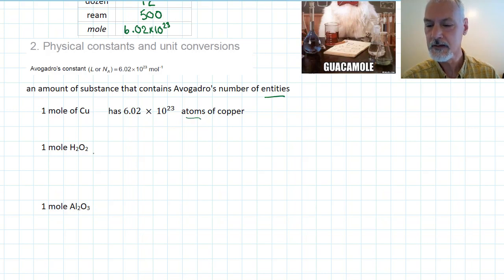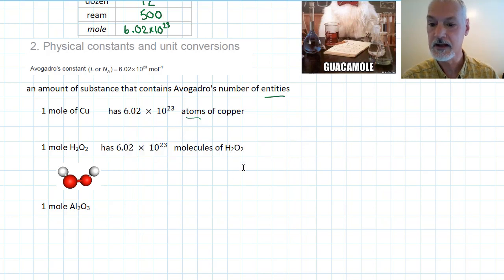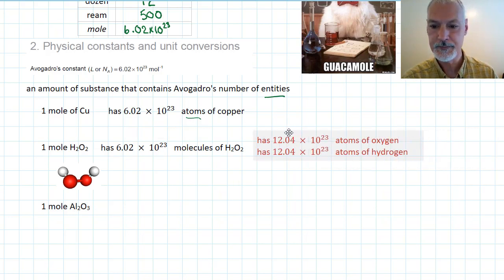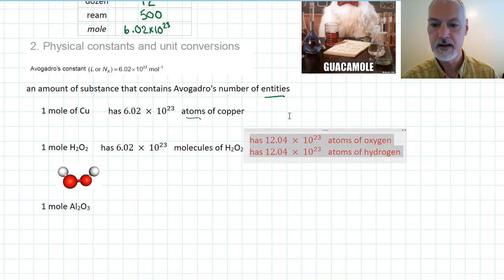Suppose I had one mole of hydrogen peroxide. Hydrogen peroxide is a molecule. It looks like this. So as a result, I would have Avogadro's number of hydrogen peroxide molecules. Now, each of those molecules contains two hydrogen atoms and two oxygen atoms. So if my question had been how many atoms are present in one mole, I need to go a step further. And I would have to double this number, as there are two hydrogens present, and double it again because of the two oxygens.